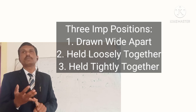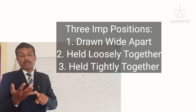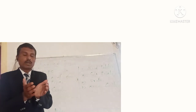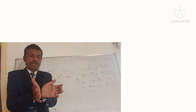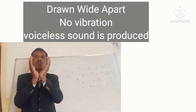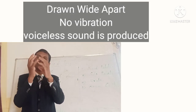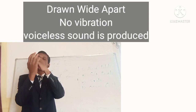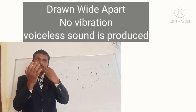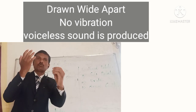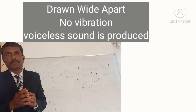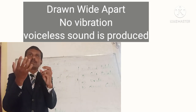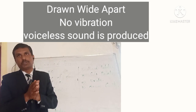When vocal cords are held wide apart, there is a big gap between the two. The air stream that comes from the lungs passes through the vocal cords without setting them into vibration. As it passes through without setting them into vibration, the sounds produced become voiceless sounds.